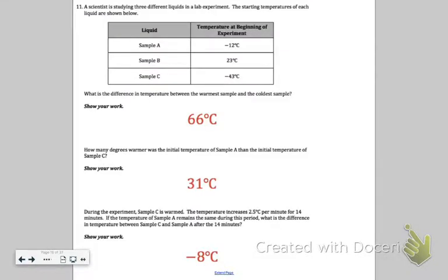For number 11, part A was 66, part B was 31, and then part C was negative 8. Part C was a little tricky because it told us 2.5 degrees per minute for 14 minutes. So make sure you did 2.5 times 14 to find the total increase in temperature for sample C.